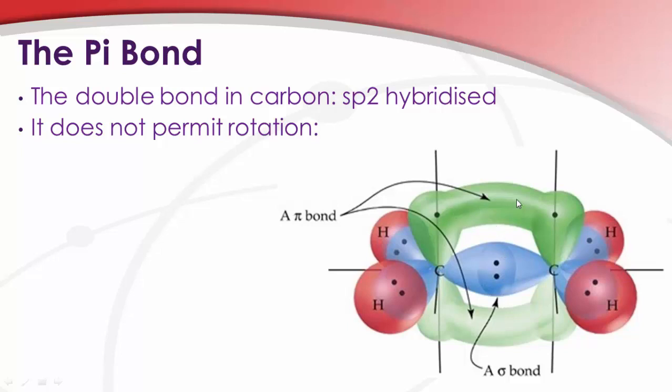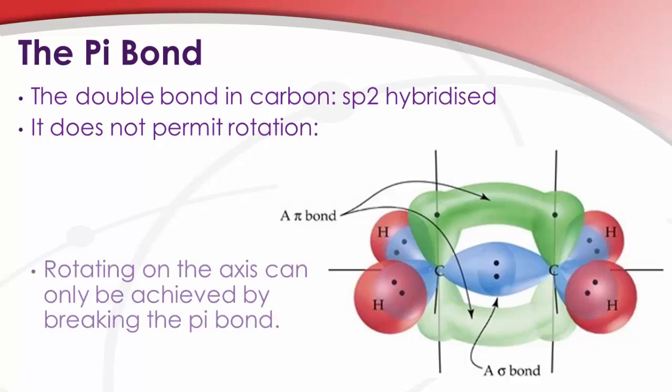And you notice that the density, the cloud here that represents our pi bond, if we were to rotate this carbon, we'd have to sever this bond. This density cloud, this orbital, would in fact be disrupted. So what does this mean? This means that you cannot rotate across this axis unless you break the pi bond in ethene. And this is a fundamentally important concept in organic chemistry.